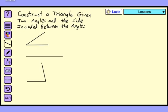In this video we will construct a triangle given two angles and the side included between the angles. Note that we can change the lengths of the sides of the angles, because what's important about the angle is the measure, or the opening.